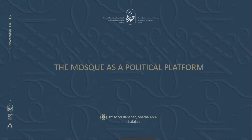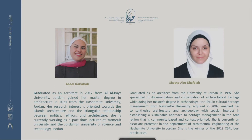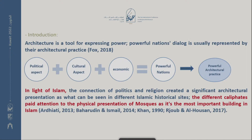We cover Islamophobia and its reflection in mosque architecture and how it reshapes mosque architecture in the contemporary age. As an introduction, having a powerful architectural practice usually requires a powerful nation, which requires three main aspects: a political aspect, a cultural aspect, and an economical aspect. In light of Islam, the time when Islam was politically powerful — mainly the major Islamic caliphates or regimes — a lot of attention was given to the presentation of mosques as the most important building in the Islamic city.